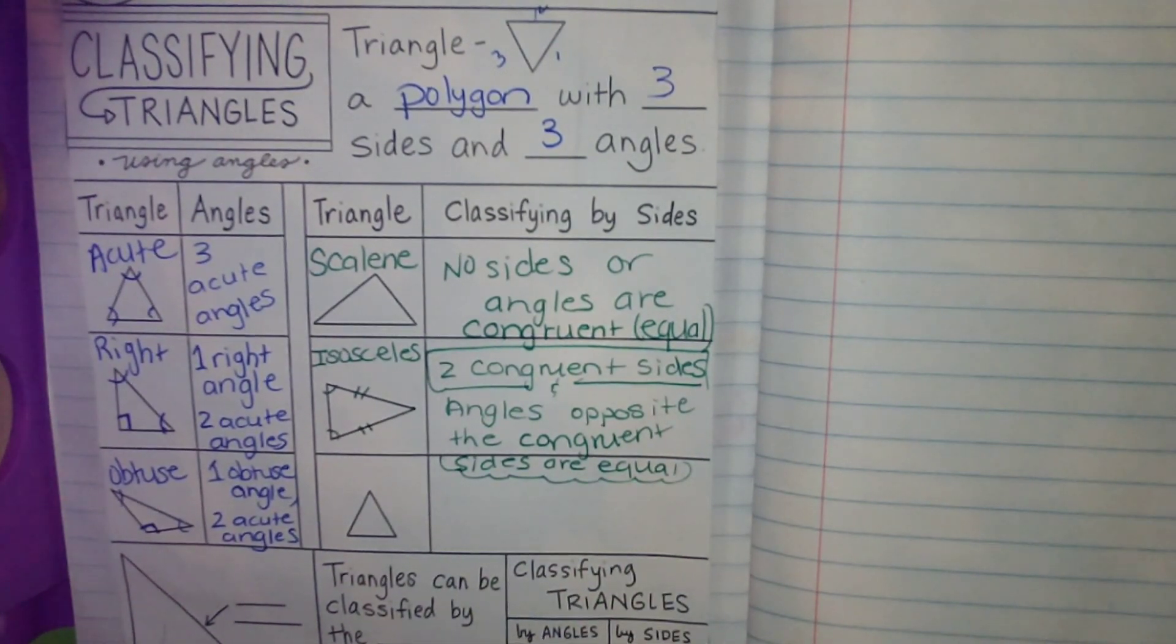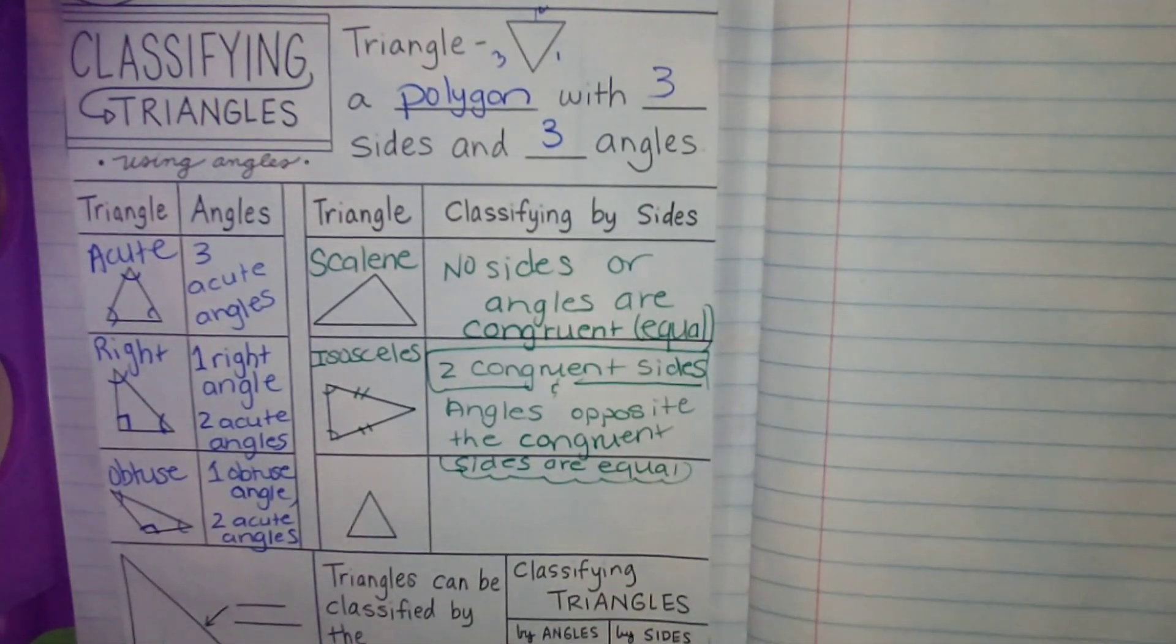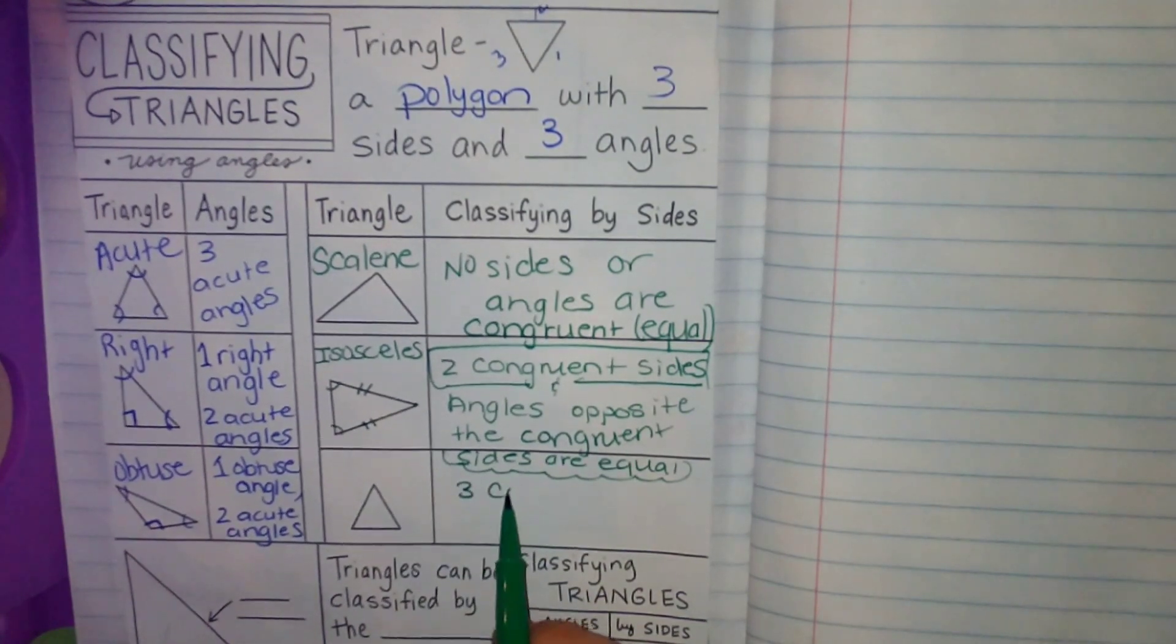But for the time being, we're going to be focusing on it has two congruent sides. A scalene has no congruent sides, two congruent sides, three congruent sides.